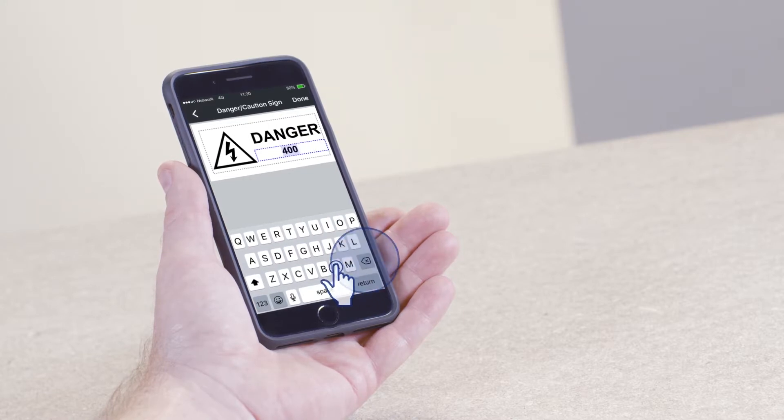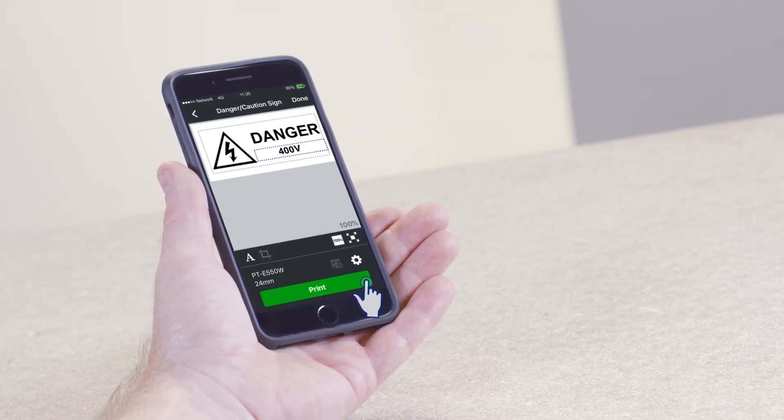Once in edit mode, you can alter the text as required. When you have finished editing the label, tap Print.